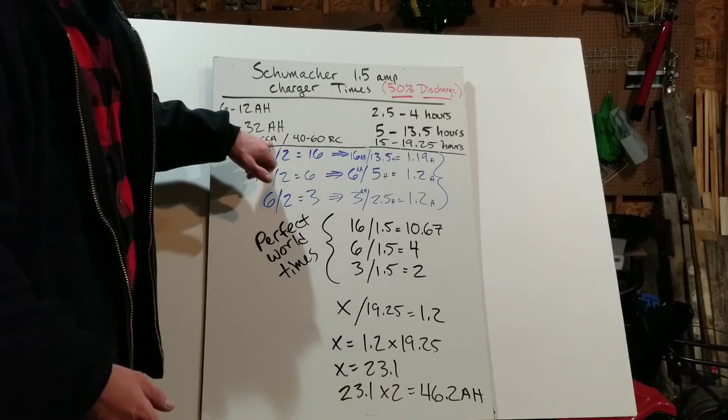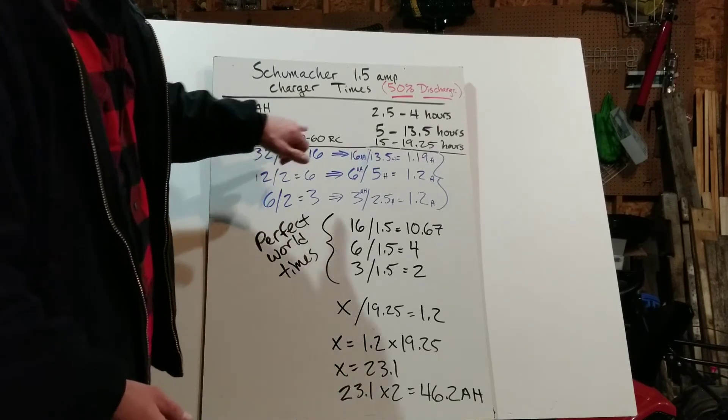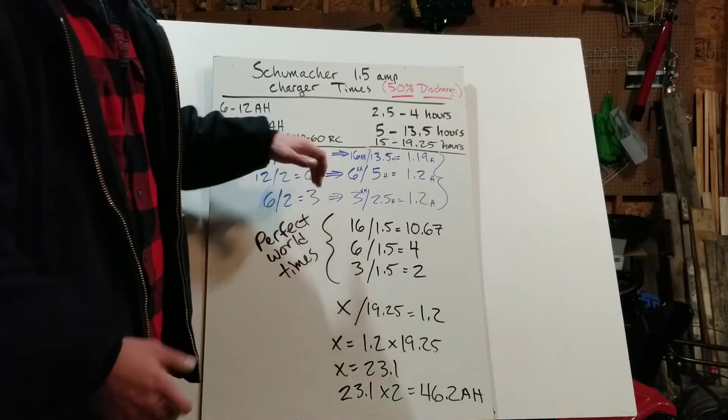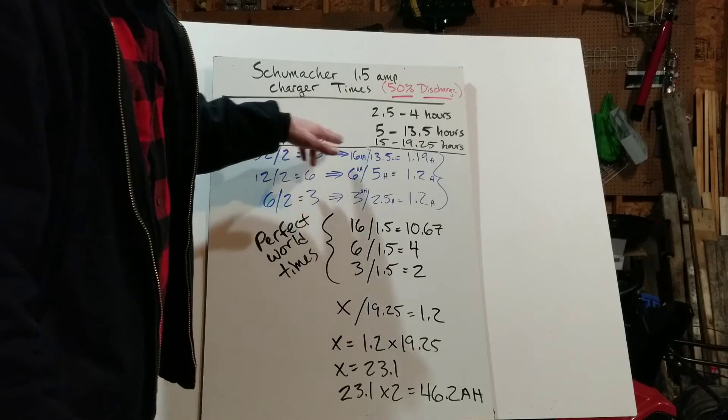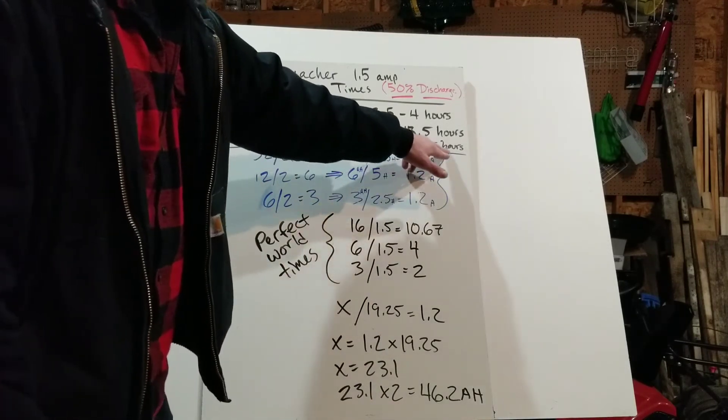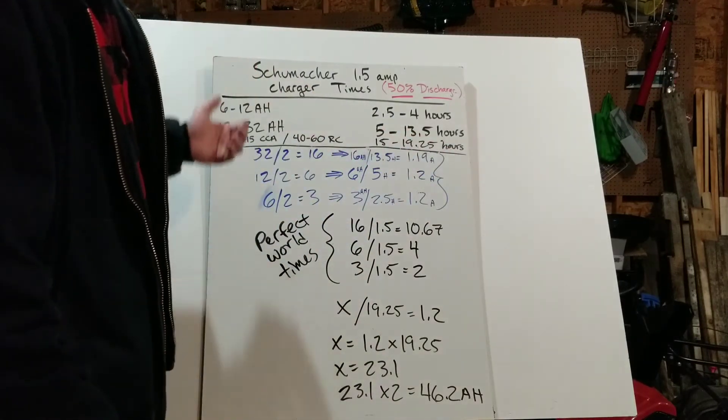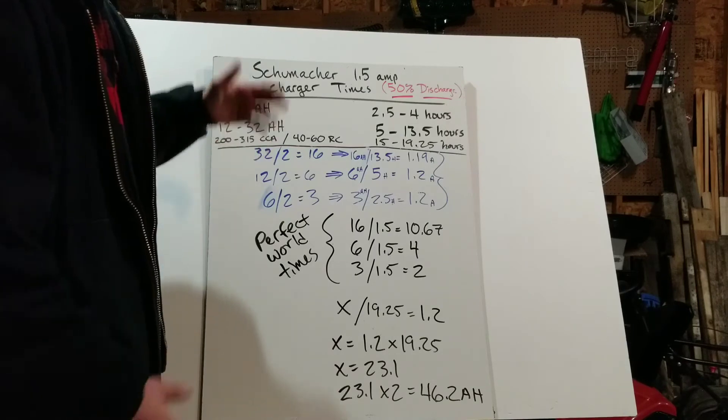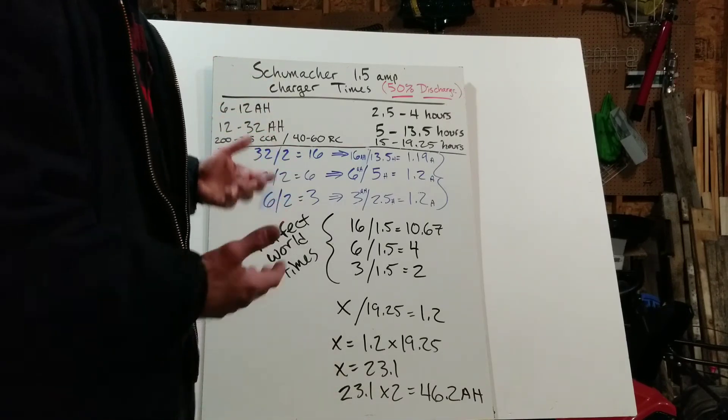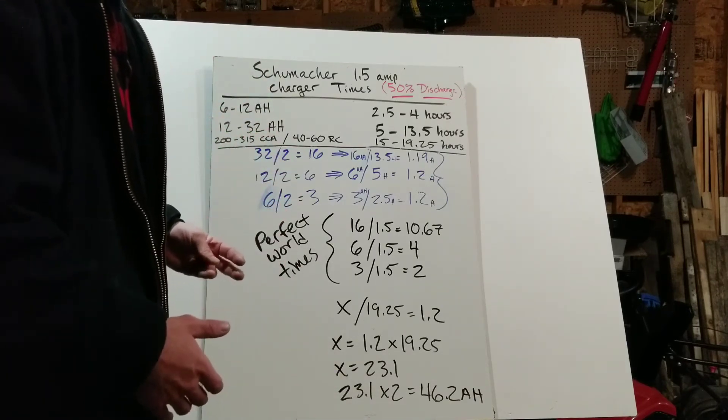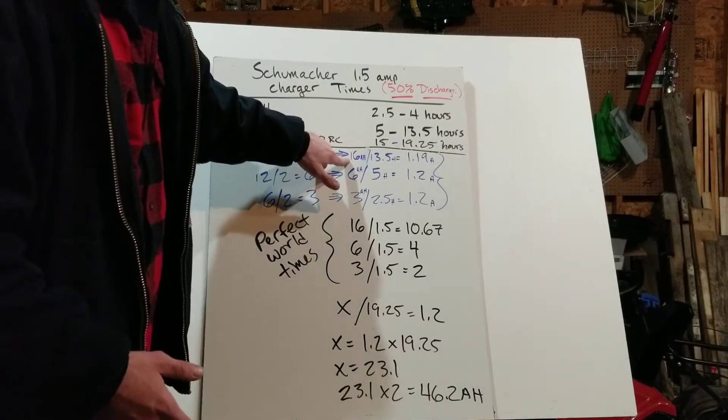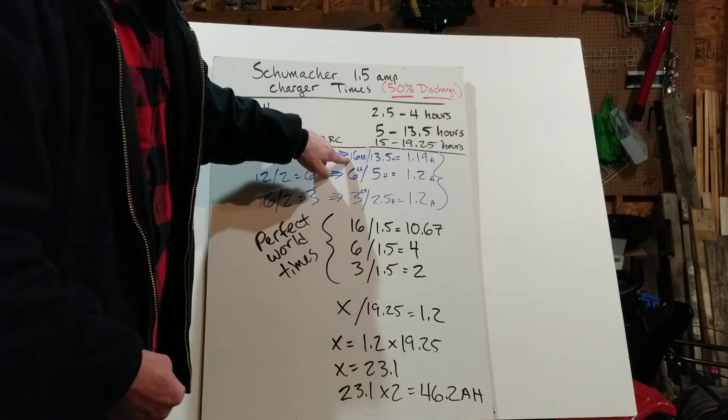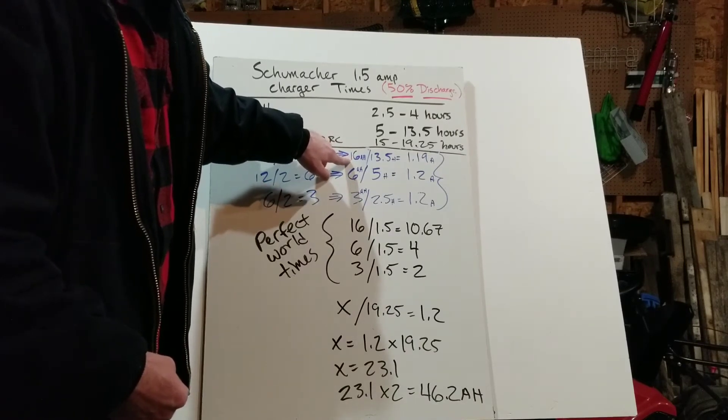So either a 315 cold cranking amps, which would be the equivalent of 60 reserve capacity, according to Schumacher, a battery manufacturer, and it would take 19.25 hours to replace 50% of the amp hours back into the battery to bring it up to a full charge.